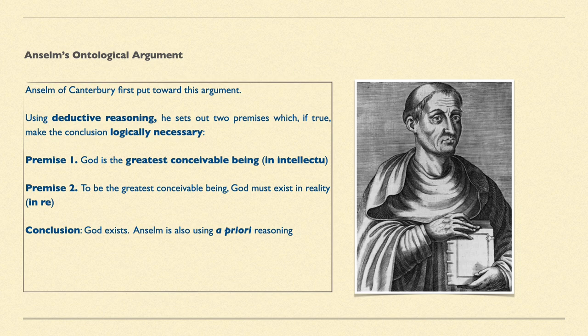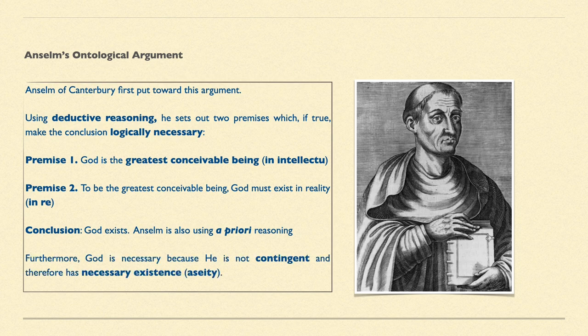Anselm is using a priori reasoning here — knowledge that is independent of his experience, basing it on definition alone. There are two parts to Anselm's argument. Furthermore, he also points out that he believes God is necessary, because he's not contingent — not dependent on anything else. Therefore, he must have necessary existence: aseity.